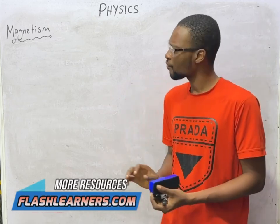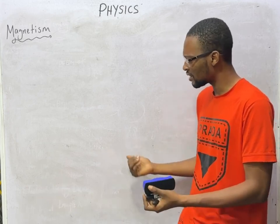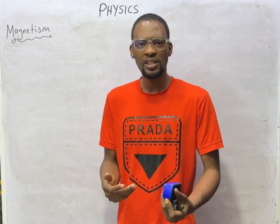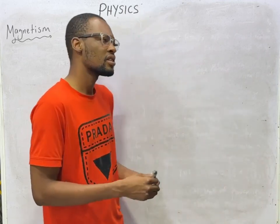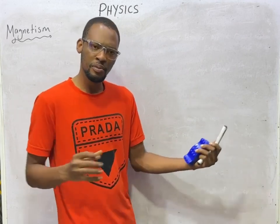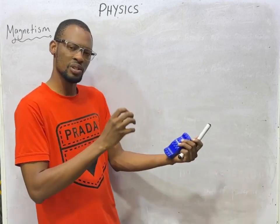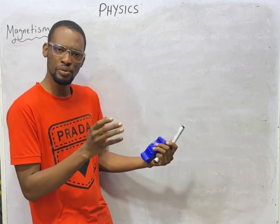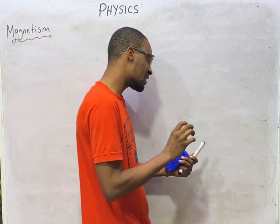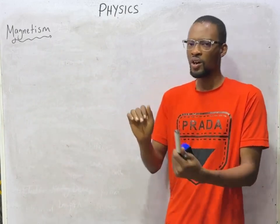When you hear magnet, what is a magnet? A magnet is simply a body possessing attractive and repulsive properties — it can attract and it can repel. Magnets can either be natural or artificial.